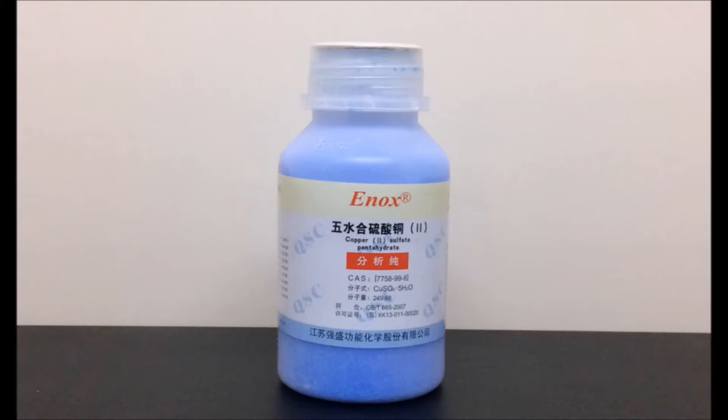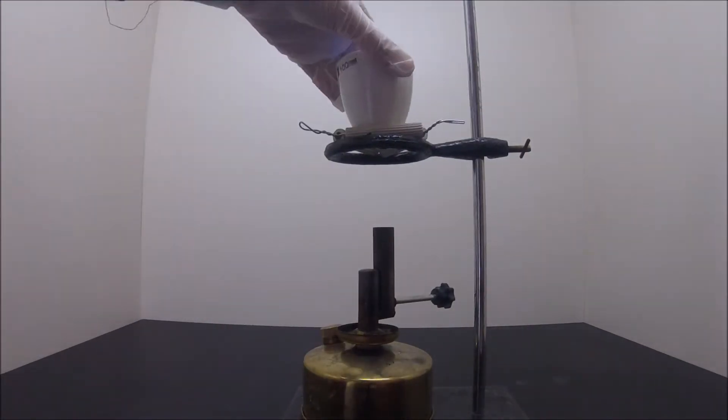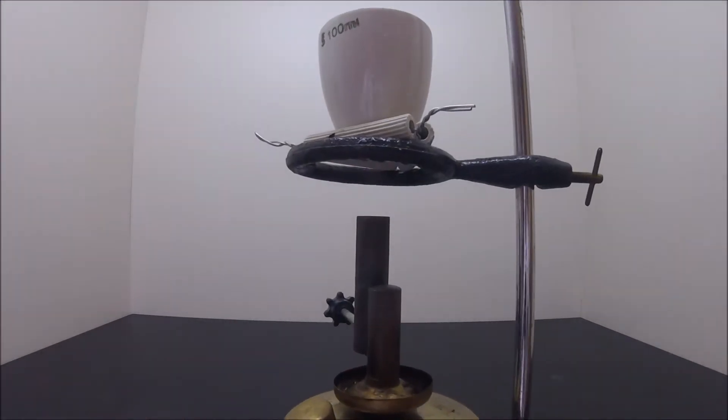The only chemical needed in this experiment is copper sulfate. So let's quickly set up the apparatus. Since looking at the side is pretty boring, let's change the angle a bit.